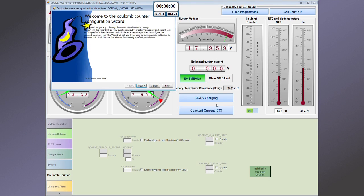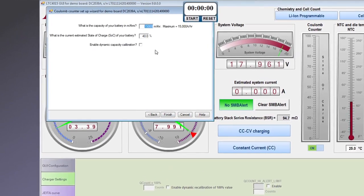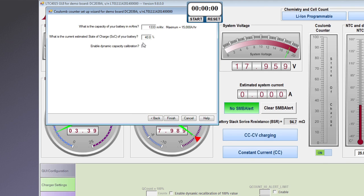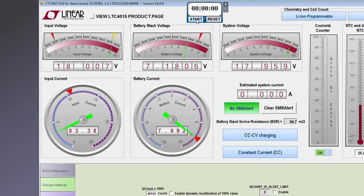Let's start by launching the Coulomb counter configuration wizard. By choosing a battery capacity of 1,333 milliamp hours, the Coulomb counter increments 10% every minute due to the 8 amp charge current. We'll let that run while we examine some other features.